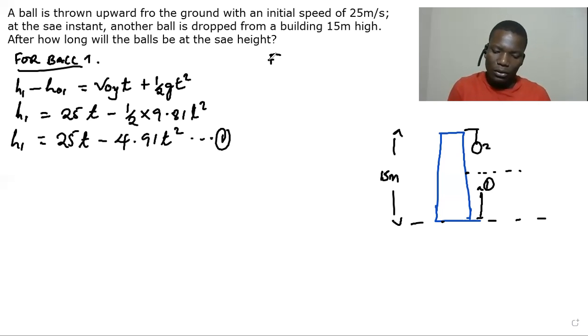And then we also write the equation of motion for the second ball. This second ball is just dropped from the building. It's just dropped, so it is not given any initial velocity. So it's going to be a free fall kind of motion.